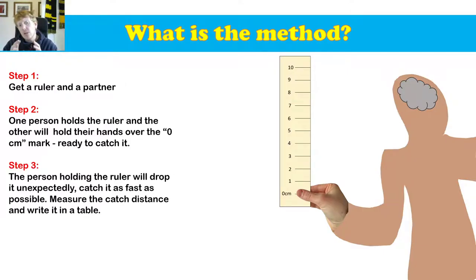Step three, the person holding the ruler will drop it unexpectedly, catch it as fast as possible, and measure the catch distance and write it in the table. Now with this unexpected dropping, it could be a long wait, it could be a short wait, it depends on how much you want to tease your partner.